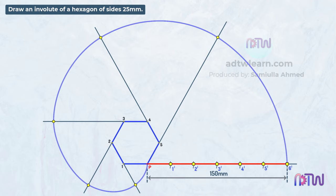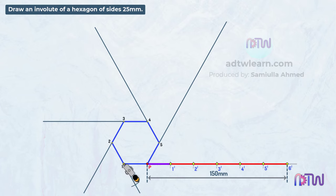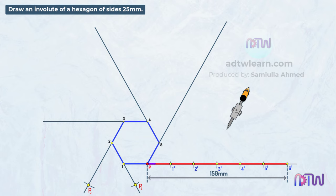To draw the involute, we need to get these points. Take the distance from point P to 1-dash, and using point 1 as a center, mark an arc. Mark this point as P1. Next, take the distance from point P to 2-dash, and using point 2 as a center, mark an arc. Mark this point as P2.